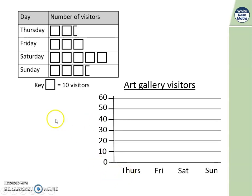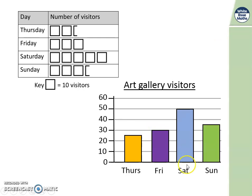Now we've got to build our bars. Thursday needs 10, 20 and five more - where would that be? 25 is halfway between 20 and 30. Friday needs to go up to 30. Saturday goes up to 50. And Sunday needs 10, 20, 30 and five more - 35 is halfway between 30 and 40. The bar stands in its space. Well done if you thought the same.